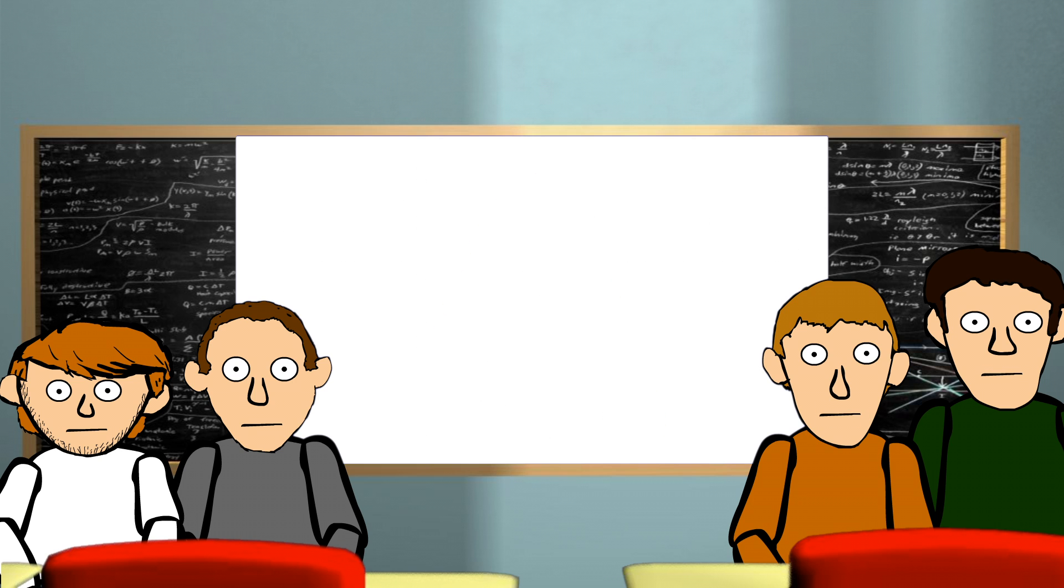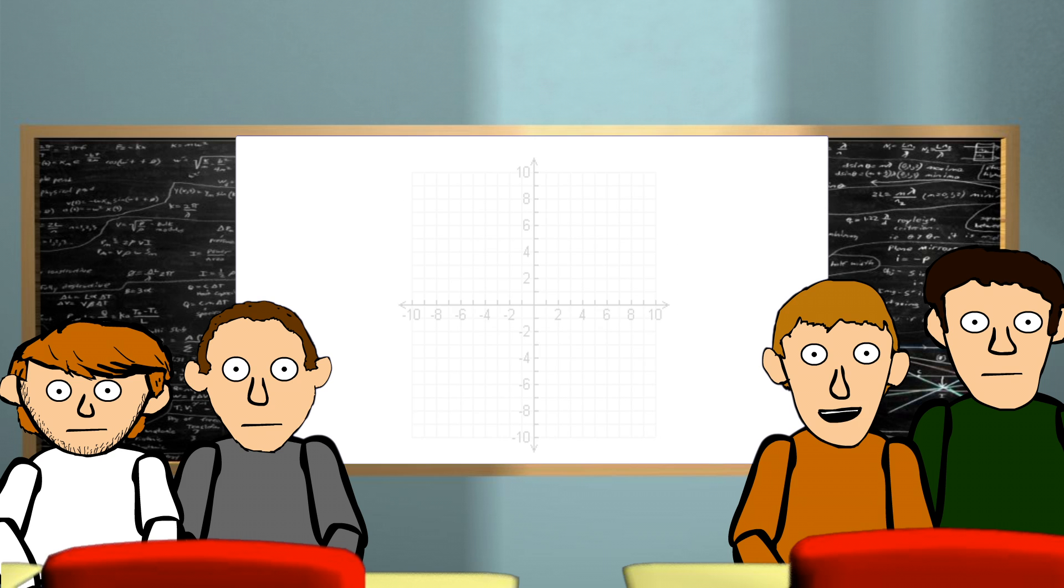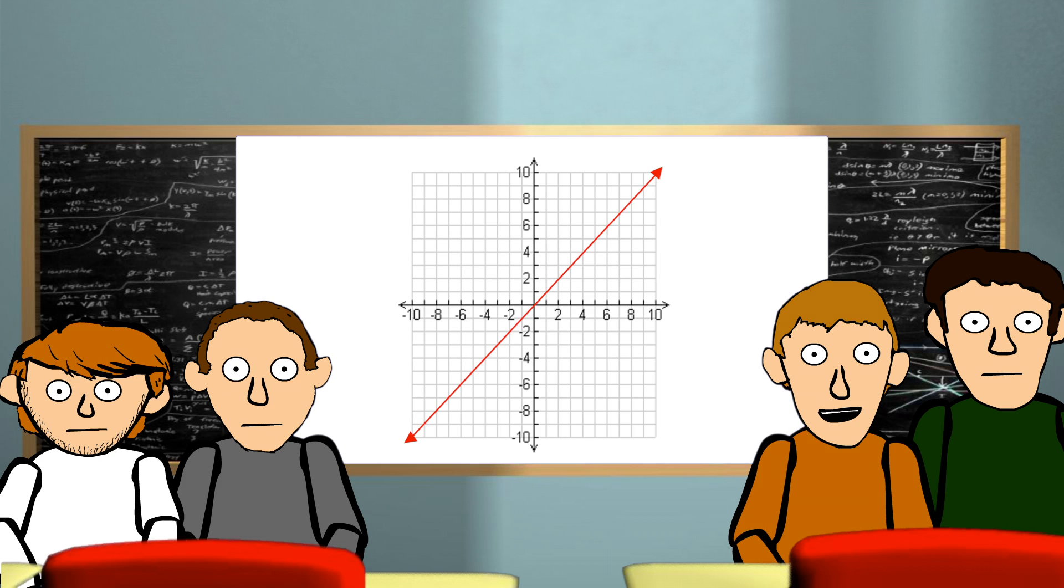For a function to be a function, it has to pass the vertical line test, which means that a vertical line can only touch the graph once. A horizontal line test is used to tell if the inverse is a function. If on the horizontal test two or more points are touched, that means the inverse is not a function. Now, an inverse function is a reflection of that function over the y equals x line. To find the coordinates for the inverse, all you need to do is swap the x's and y's from the original function.